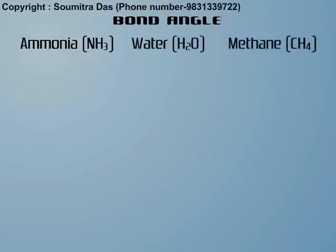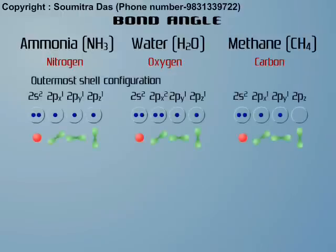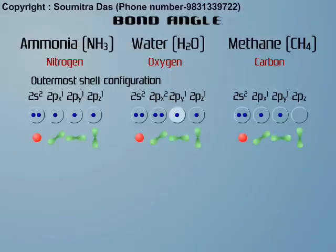In ammonia, water and methane molecules, the nitrogen, oxygen and carbon atoms have electronic configurations of their outermost shells as follows: N = 2s2, 2px1, 2py1, 2pz1. Oxygen = 2s2, 2px2, 2py1, 2pz1. Carbon = 2s2, 2px1, 2py1. In the excited state, one electron from the 2s orbital of carbon goes to the 2pz orbital.